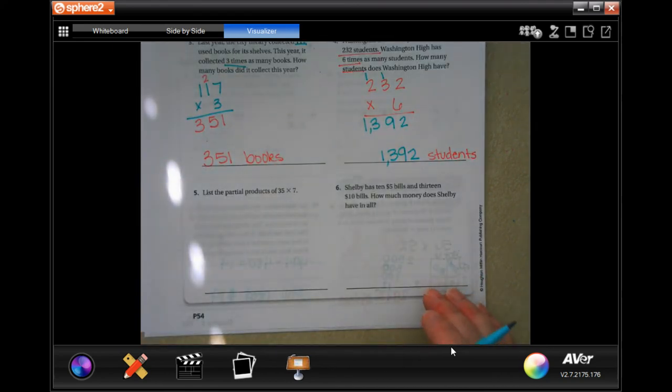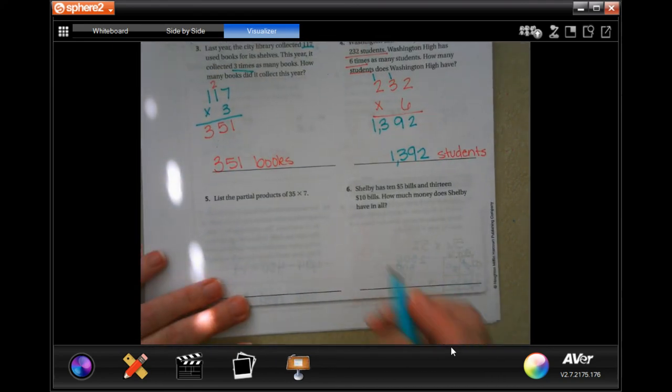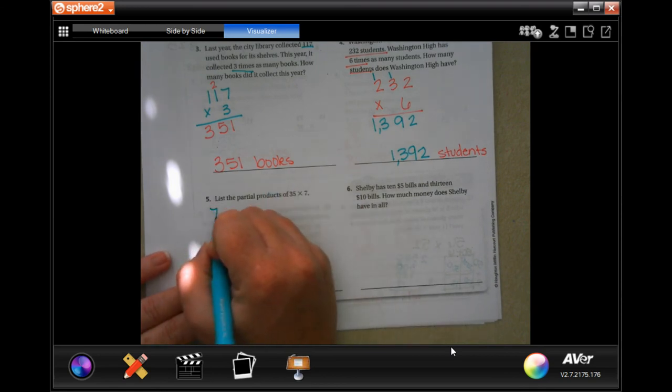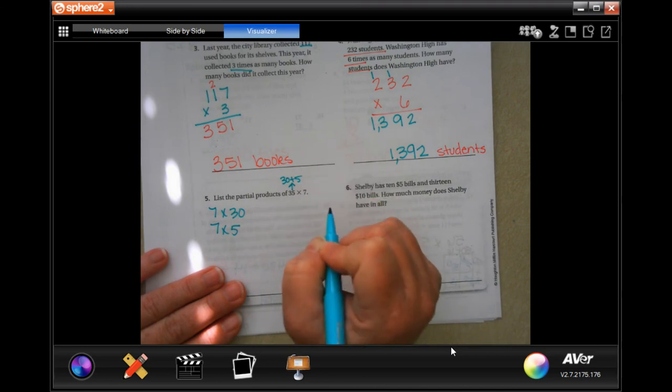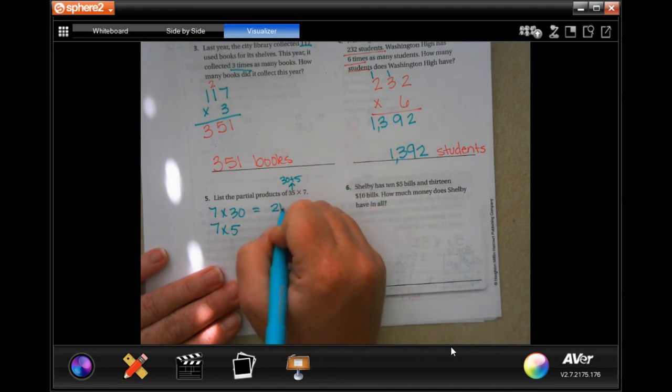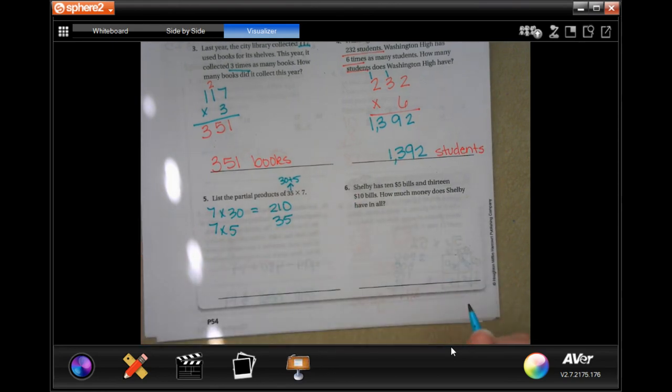List the partial products of 35 and 7. Well, that makes 7 times 30 and 7 times 5. Because 35 is 30 plus 5, and then you're multiplying 7 by each 1. So 210 and 35. Those are your partial products. You won't do anything else.